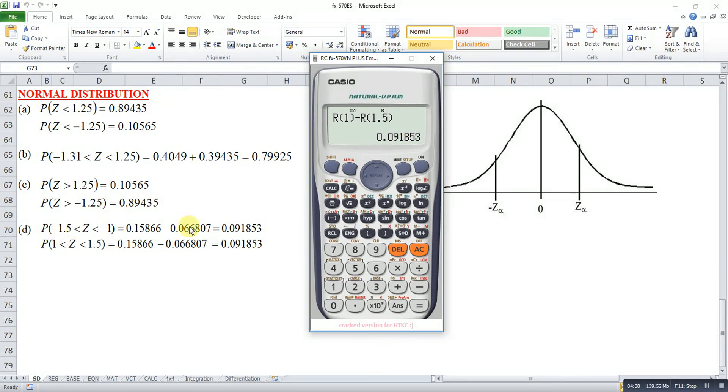So we have this. So we take 1.5. Then minus Shift 1, 5, 3, 1. Then we have this.